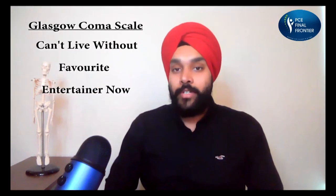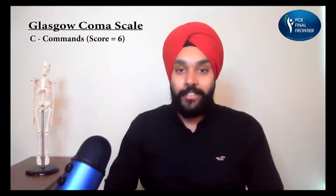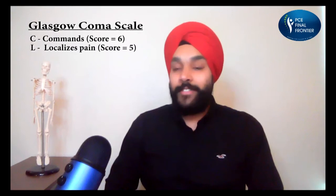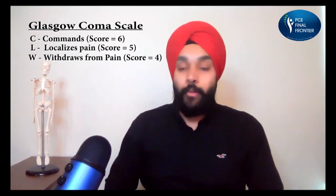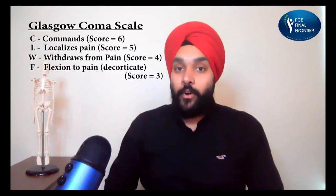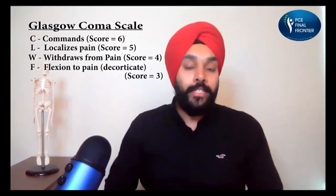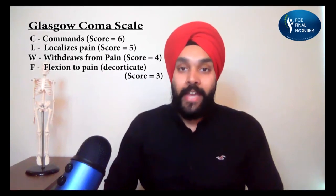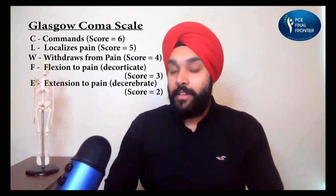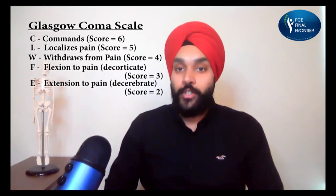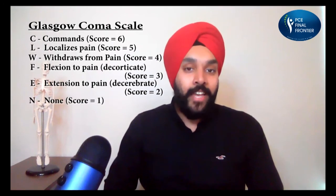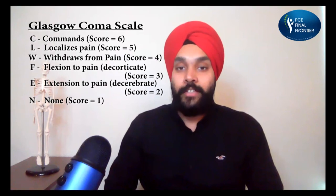The final component is Motor Response, with a total score of 6. The mnemonic is 'Can't Live Without Favorite Entertainer Now': C stands for commands, score 6; L stands for localizes to pain, score 5; W stands for withdraws from pain, score 4; F stands for flexion to pain, also called decorticate rigidity, score 3; E stands for extension to pain, also called decerebrate rigidity, score 2; and N stands for no response, score 1.